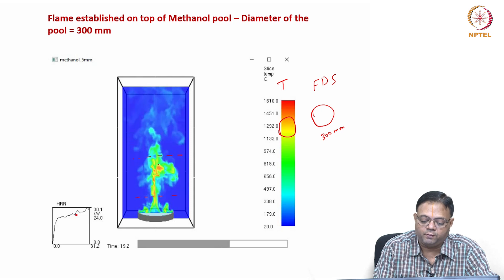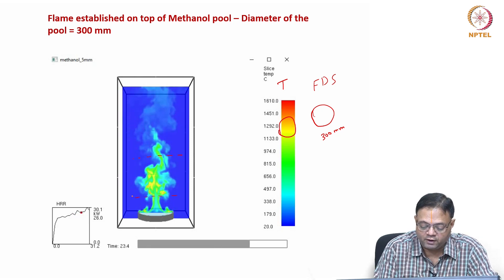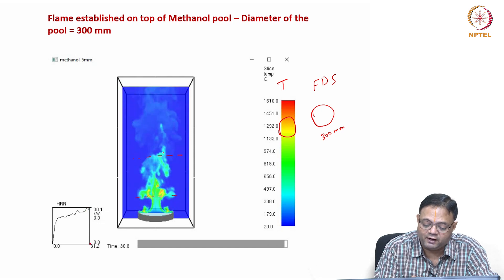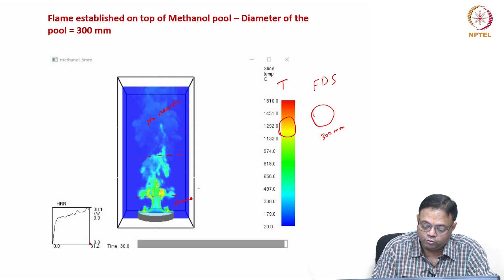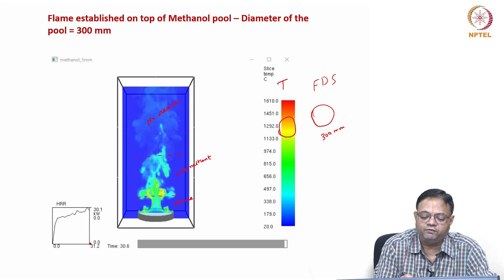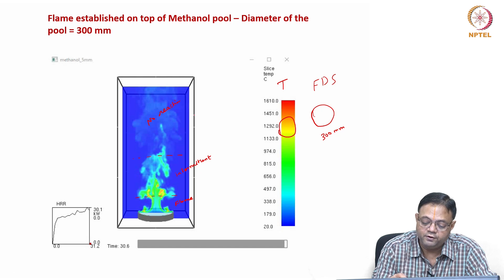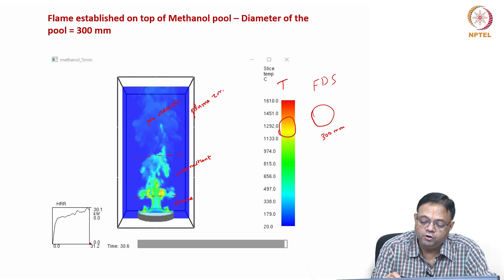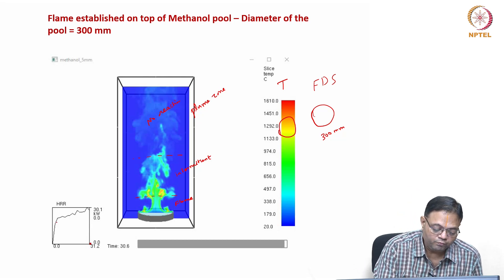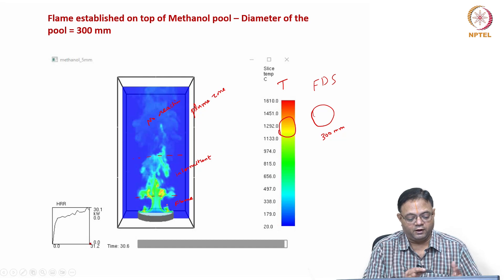Sometimes the flame is seen in the intermittent region, sometimes it is not. There is a particular length at which the reaction is always happening; after that the reaction happens intermittently; then beyond a certain length there is no reaction at all. These are the three zones: the continuous flame zone, the intermittent zone where there is oscillation, and the plume zone where hot gases rise but no reaction occurs. A flame like this has these three zones, and the heat release rate shows a sharp increase then stabilizes after a certain time.